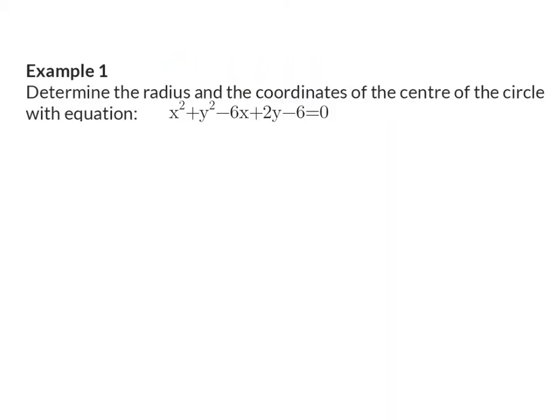Example 1: Determine the radius and the coordinates of the center of the circle with equation x squared plus y squared minus 6x plus 2y minus 6 equals 0.